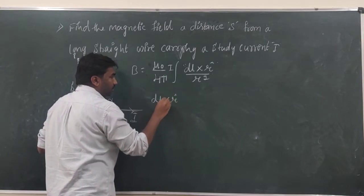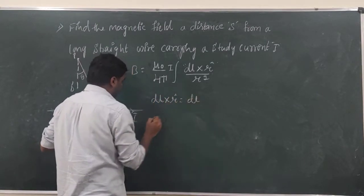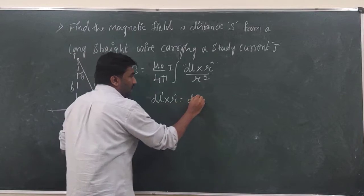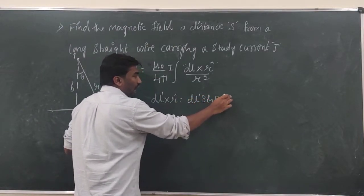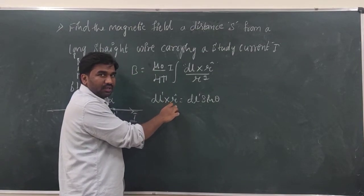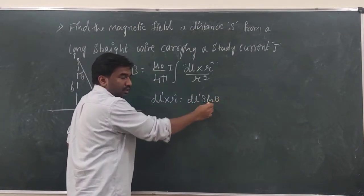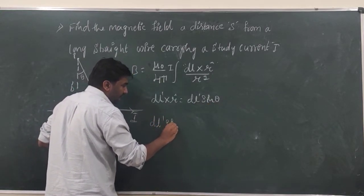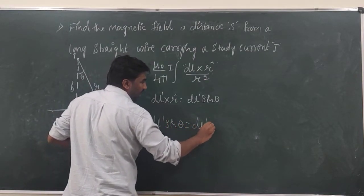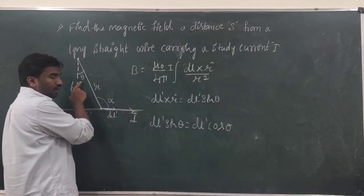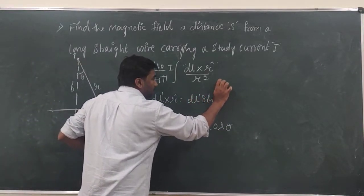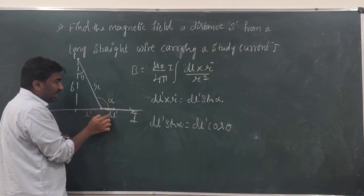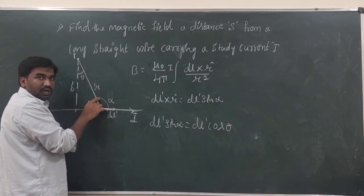The cross product dl × r̂ gives dl·sin θ, since the magnitude of r̂ is 1. Our length element is dl', so dl' × r̂ gives dl'·sin α, where α is the angle between dl' and r̂.